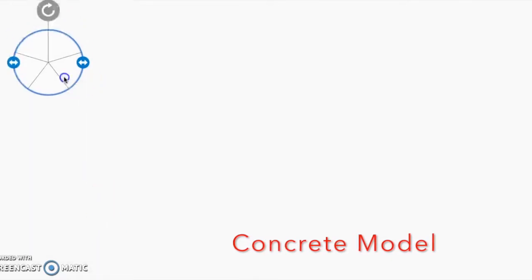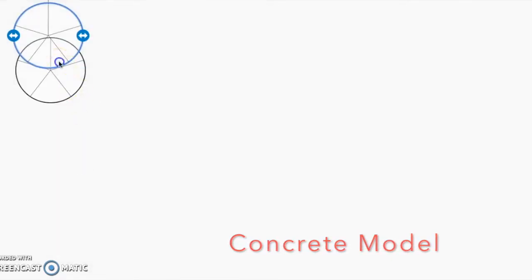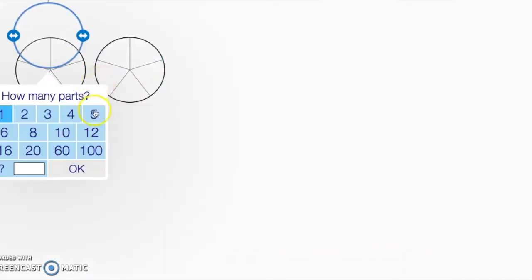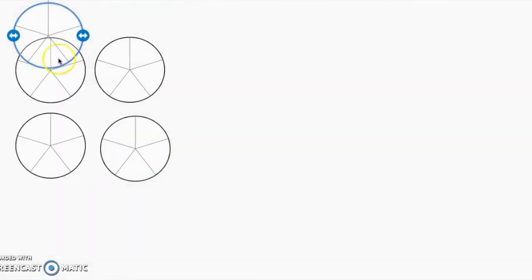The first strategy we will use is a concrete model. We start by placing five circles to represent the five Kool-Aid cups. Then we partition each circle into five equal parts. We partition this into five equal parts because we are looking for fifths. The denominator is five.